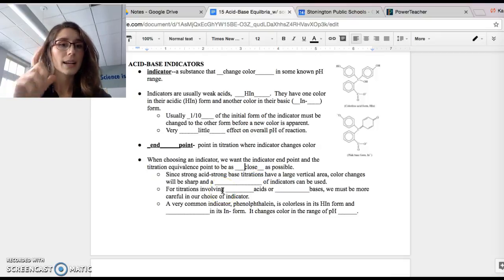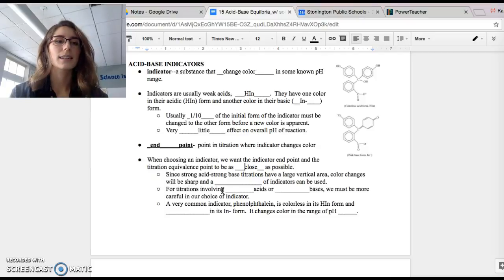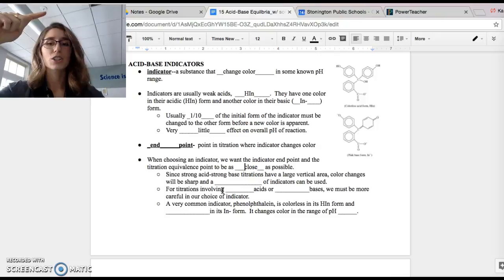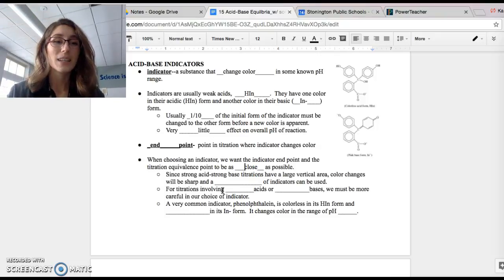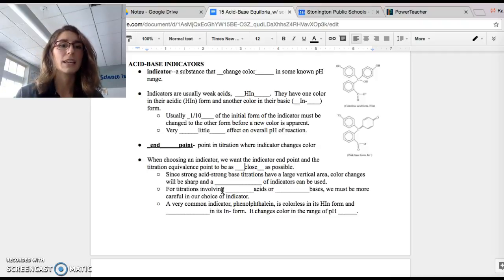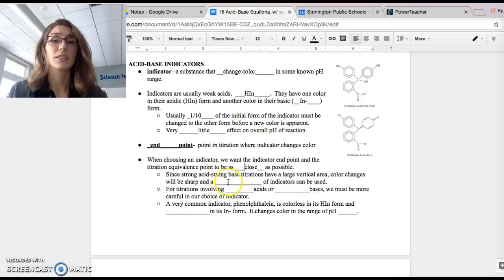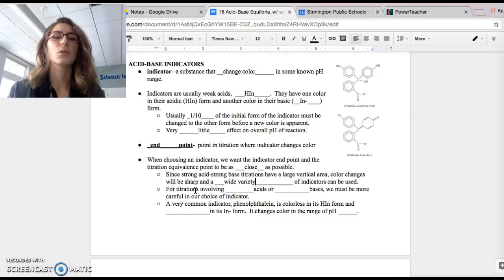For strong acids, strong base titrations, we talked about this in class today, the equivalence point has a huge vertical region because we don't see any buffering. So there's a gigantic section of pH change for the equivalence point, or where we see the equivalence point. That means that we can be kind of sloppy with our choice of pH indicator because at the equivalence point, a gigantic range of pHs is covered. So we can choose from a wide variety of indicators for a strong acid, strong base titration.